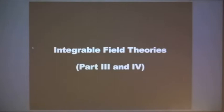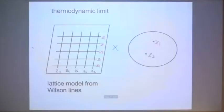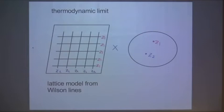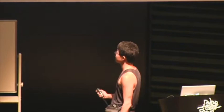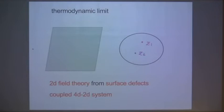Now I'm coming to integrable field series, quantum field series. There is a nice way to start with lattice models and go to quantum field series: take the thermodynamic limit. I can make the lattice spacing smaller and smaller until I obtain a quantum field series in two dimensions. In this process, previously we had a Wilson line, which is a 1D defect, but now with infinitely many parallel ones, in the limit it fills a two-dimensional plane. So the Wilson line is turned into a surface defect — a two-dimensional defect inside four dimensions — giving a coupled 4D-2D system.